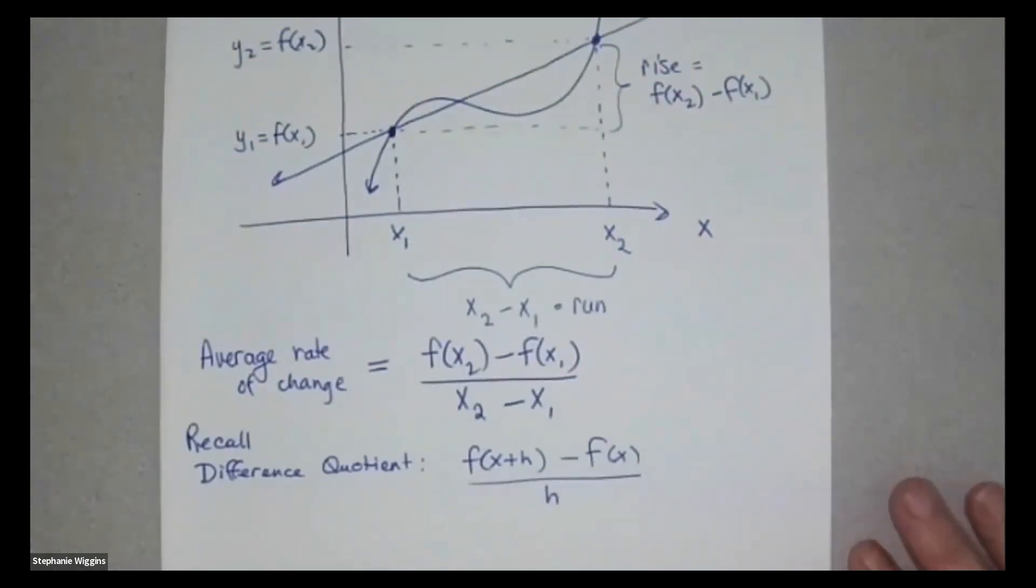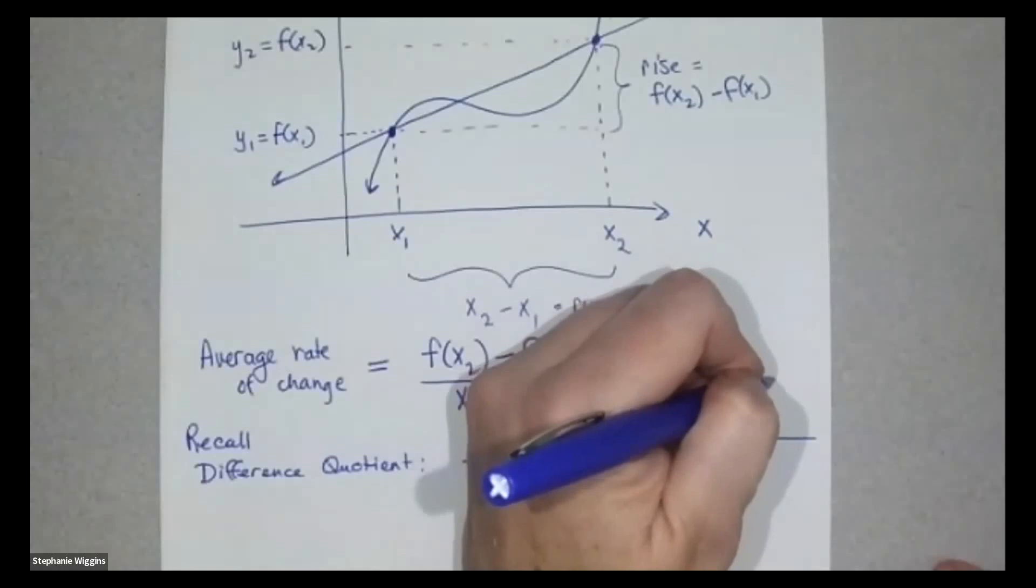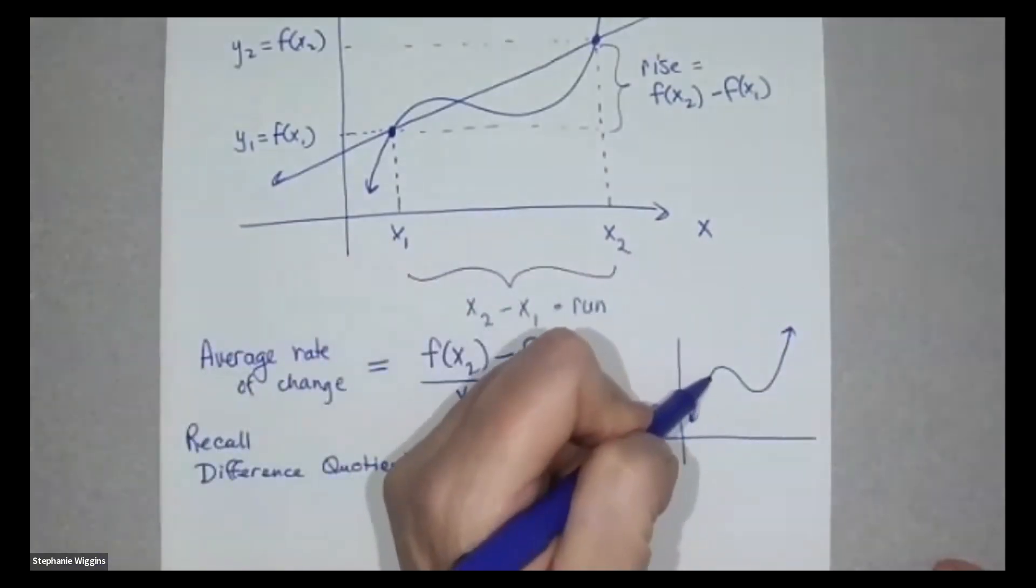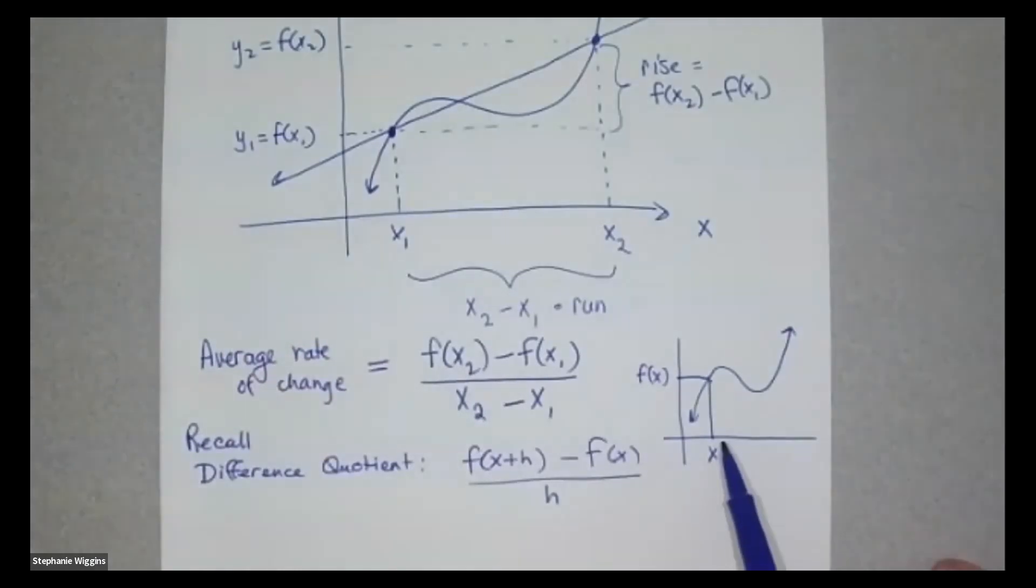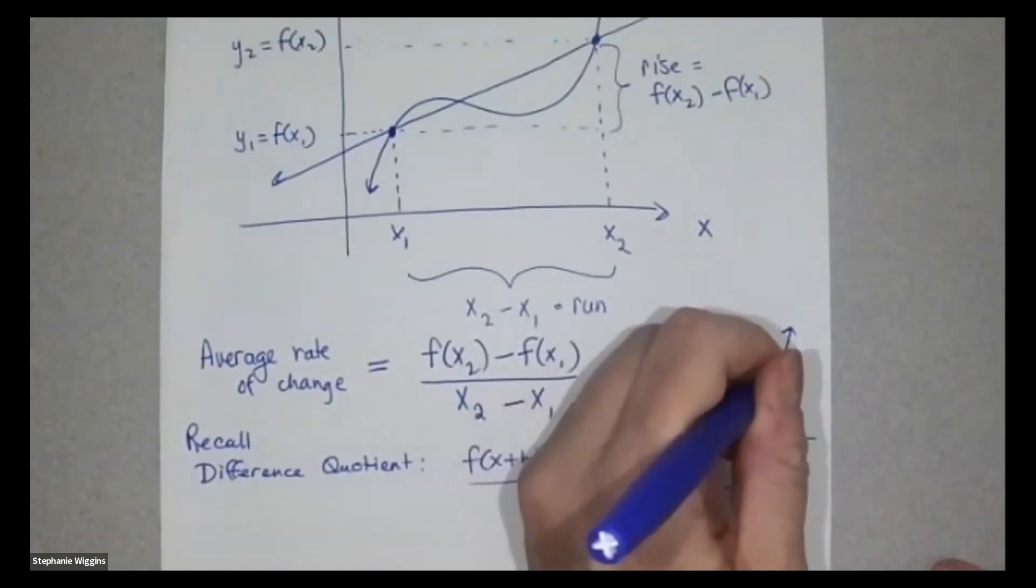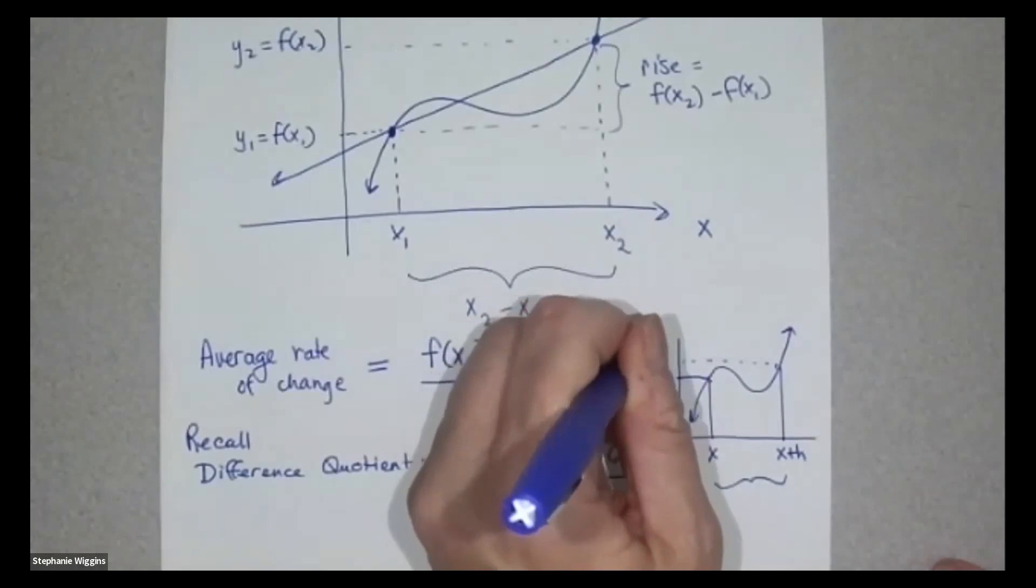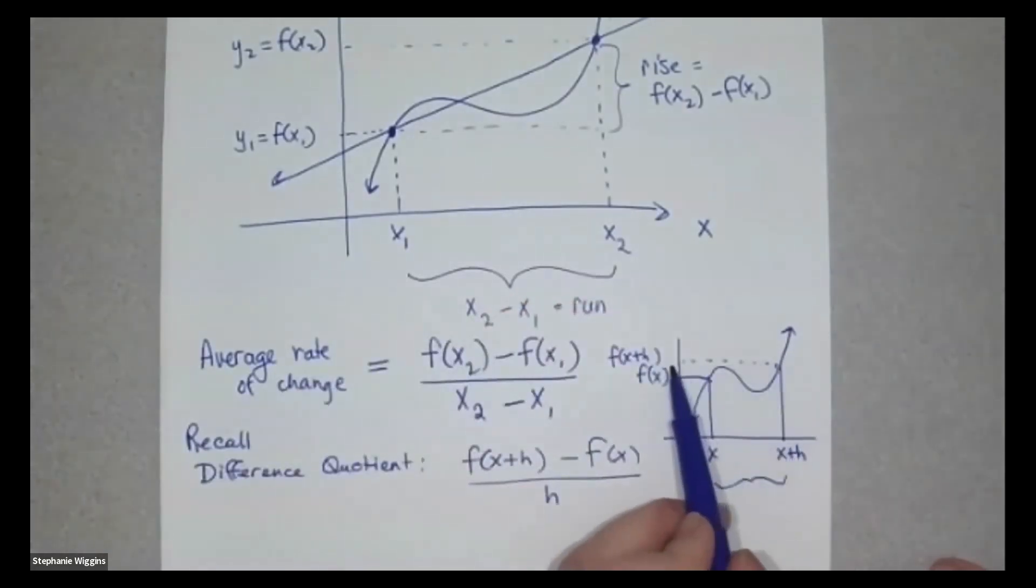Let me just show you a picture. So over here, we have our function. And if I pick a point x, this is going to be f of x. And if I move a distance h, so if this distance from here to here is h, then this point is x plus h. And this distance is f of x plus h. Let me just plug it in and go over. So this is the rise. This little piece here is the rise. This is the run. So the rise is f of x plus h minus f of x, and the run is h. So it's really the same thing. It's just written a different way.